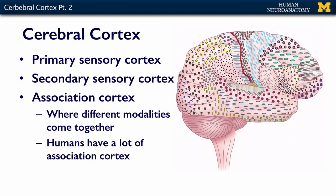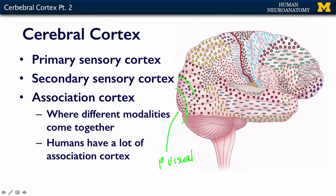Primary sensory cortex is where a sensory modality comes to perception. Just beyond the primary sensory cortex is the secondary sensory cortex. If primary sensory cortex for vision — let's use vision because it's easy — is right here as primary visual, it's not enough to just perceive that you can see something. You have to process it and figure out what it is. That's what happens as you go further away from that primary sensory cortex — secondary, tertiary, and then you get into these big areas at the edge of the parietal lobe and the temporal lobe that are called association cortex.